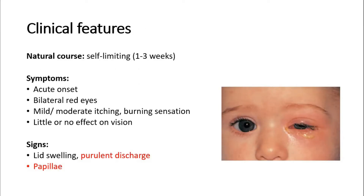For clinical features of bacterial conjunctivitis, the cause is usually self-limiting, which lasts for a minimum of one week and may last up to three weeks. The symptoms are of acute onset. There will be bilateral red eyes, mild to moderate itching or burning sensation of the eye, and little or no effect on vision.